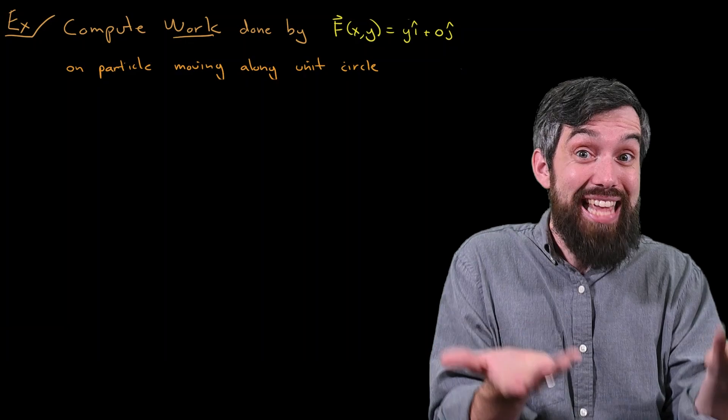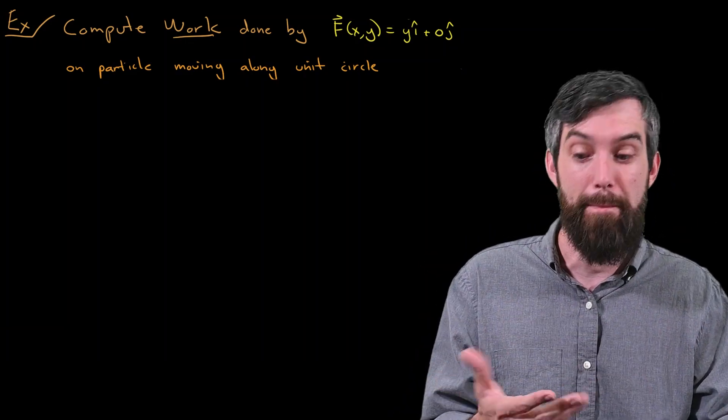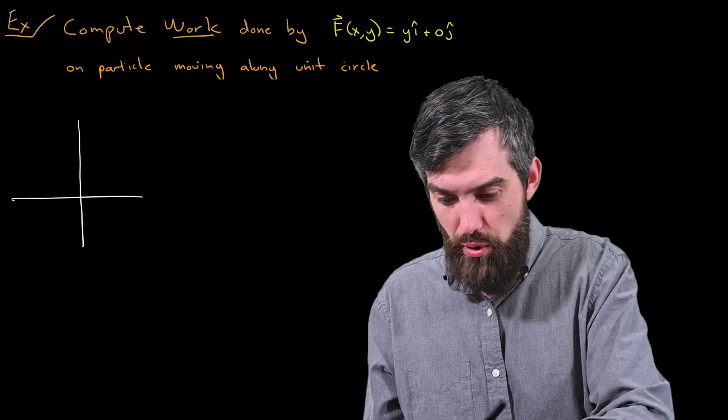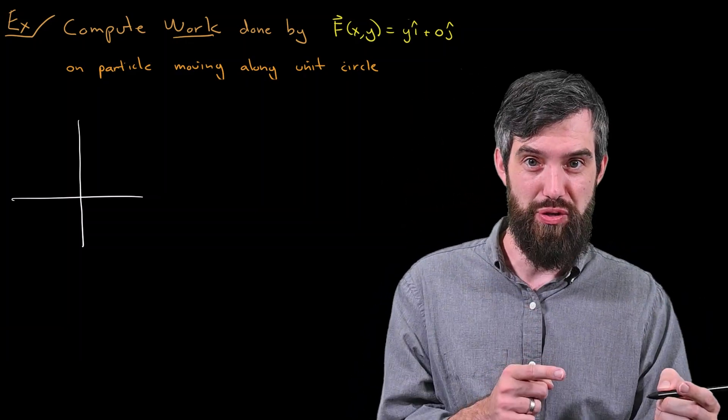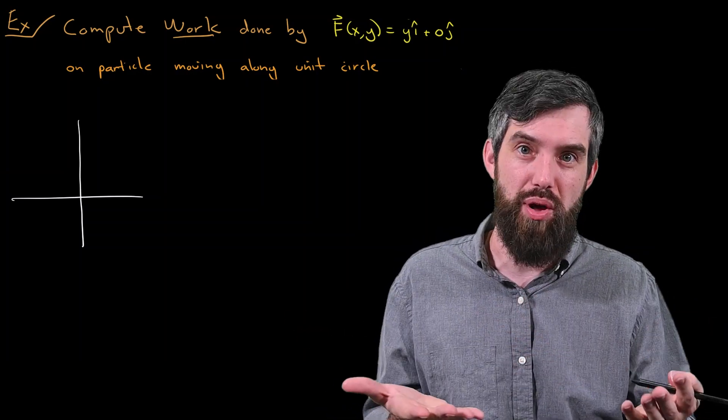So let me just first sketch what this looks like, just to get a little bit of an intuitive feel for what's going on. So if I have just my normal x, y coordinates, what does this vector field look like? So first of all, there's zero j-hat component, so all the vectors are pointing horizontally.